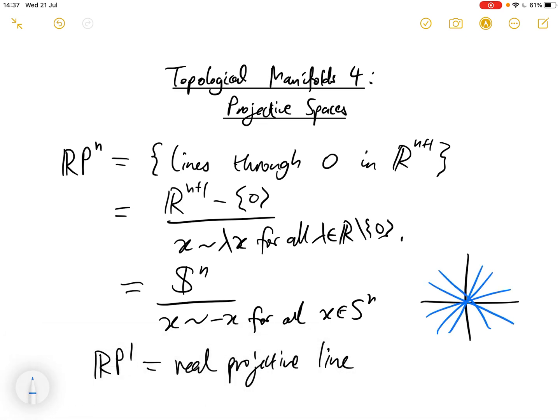So you might have in your mind some sort of image like this. The space of all lines through the origin, where each of these lines is a distinct element in RP1.